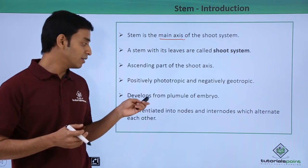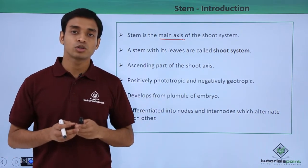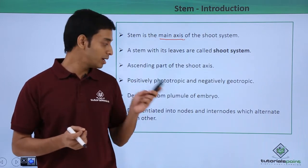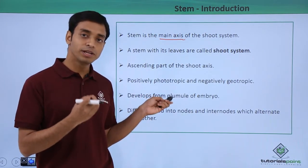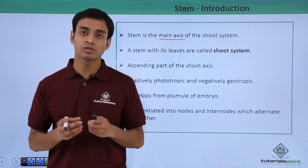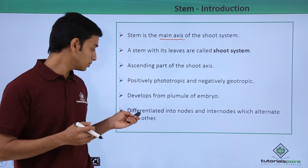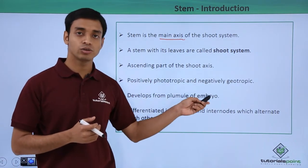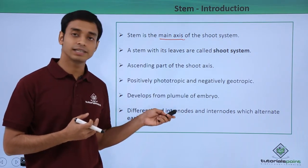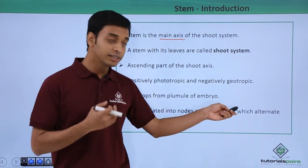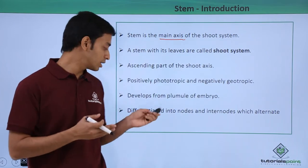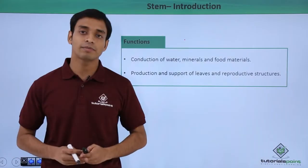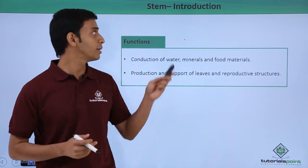The stem develops from the plumule of the embryo. While roots develop from the radicle, from a germinating seed the plumule develops into the shoot system or stem. The stem is differentiated into nodes and internodes, which are present throughout the stem and alternate each other along its entire length.